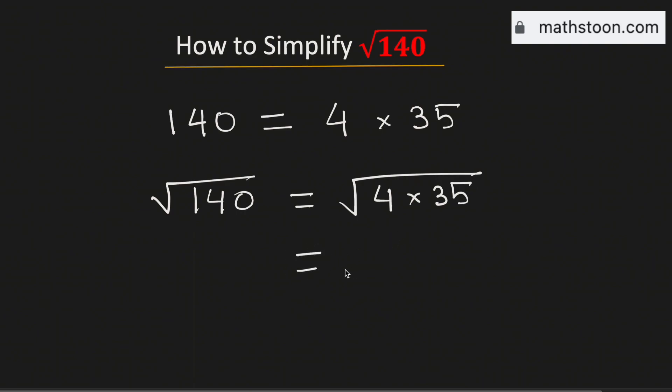Now this can be broken up into square root of 4 times square root of 35. Square root of 4 is 2 and square root of 35 remains the same, as it cannot be simplified further.